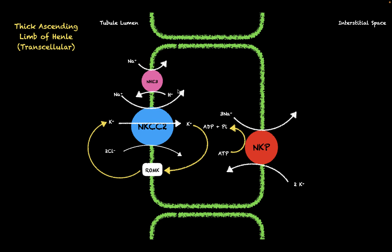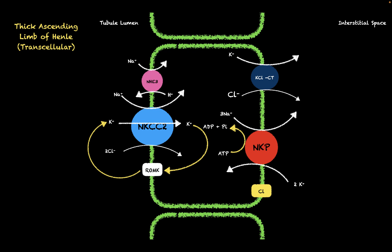Now that we have sodium and chloride inside the cell, how do we move them to the interstitial space? For chloride, there are two main transcellular mechanisms on the basolateral side: the potassium-chloride co-transporter, which couples the downhill movement of potassium to move one potassium and one chloride out of the cell, and chloride channels, which allow chloride to move directly into the interstitial space. There is also a potassium channel that allows potassium to flow out of the cell.